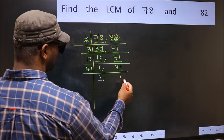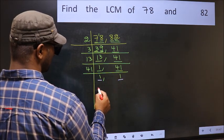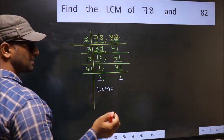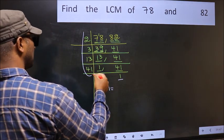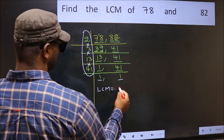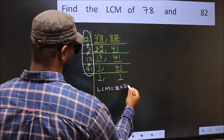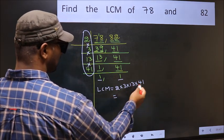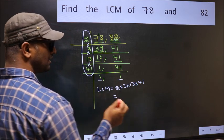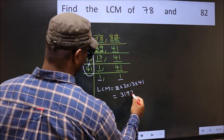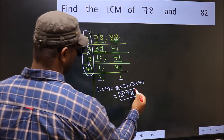So, we got 1 in both the places. So, our LCM is the product of these numbers. That is 2 into 3, into 13, into 41. When we multiply these numbers, we get 3198 is our LCM.